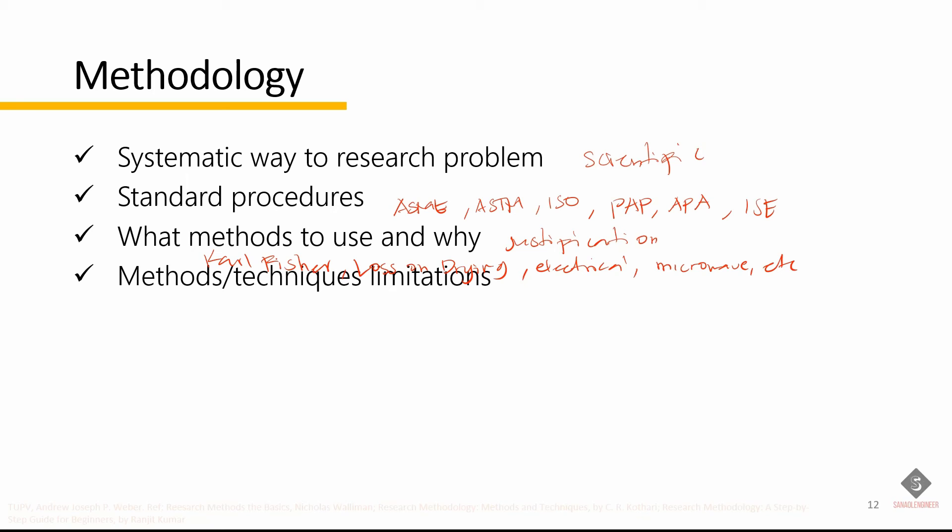Researchers also need to understand the assumptions that underlie various techniques, and they need to know the criteria by which they can decide that some techniques and procedures will be applicable to certain problems and others will not. In other words, each method and technique have strengths and weaknesses. They have scope and limitations. You have to remember that not all techniques and methods are one size fits all. Researchers should be aware of this, for they might affect the integrity of the data and would therefore skew the results of the research.